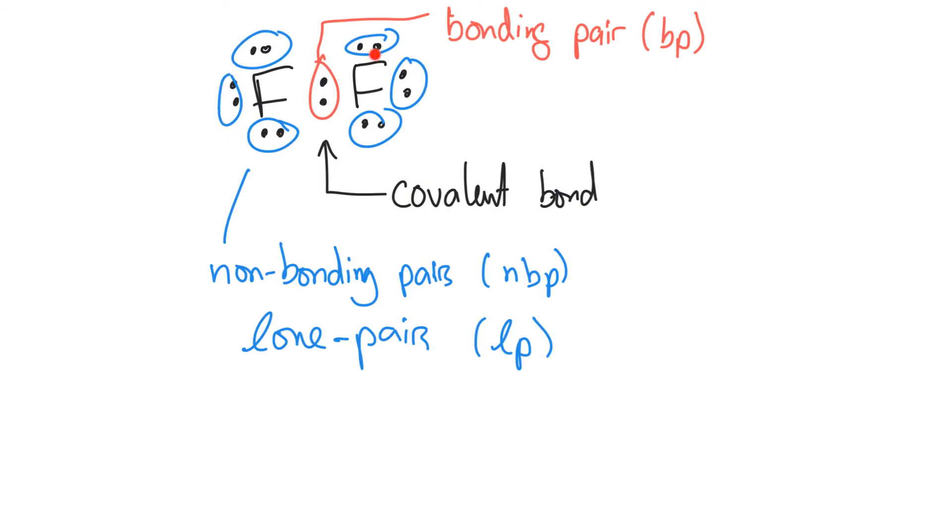We've got six lone pairs here. One, two, three, four, five, six, and we've got one bonding pair that's gluing the atoms together. Most of the time, we don't write all these dots out like this. What we do is we write a line between the atoms, and that line is a covalent bond, and it represents the sharing of a pair of electrons. This covalent bond, this line here, is the same thing as this up here.